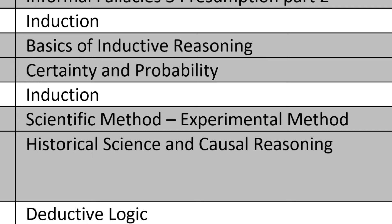Some people are just more equipped to pick up math easily — it's not that others aren't capable, but it comes easier to some. Same with literature. If you want to think of deductive logic as more akin to math, that's not a bad thing — it's about form, structure, and relationships, and math is a type of deductive enterprise. If you're good at math you may pick up deductive logic quickly.